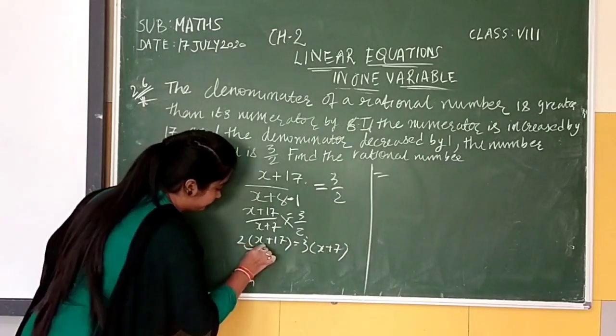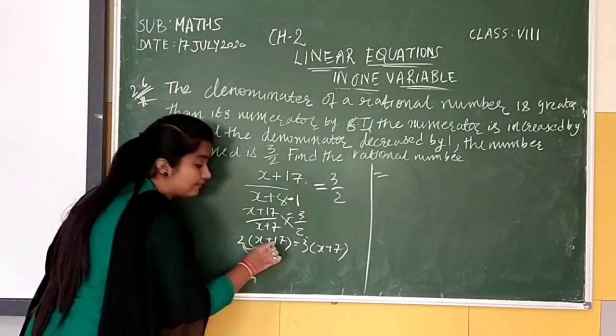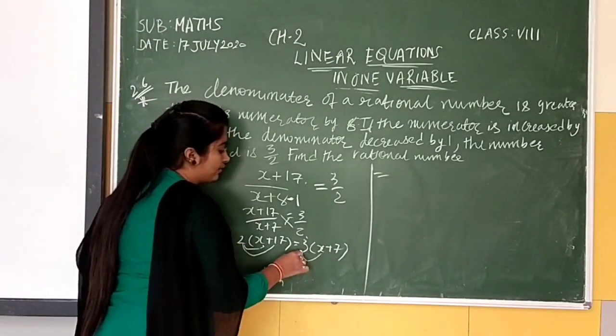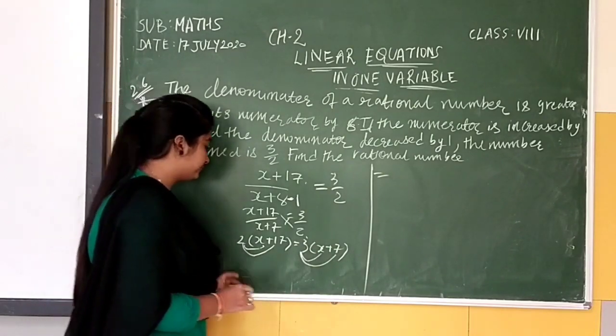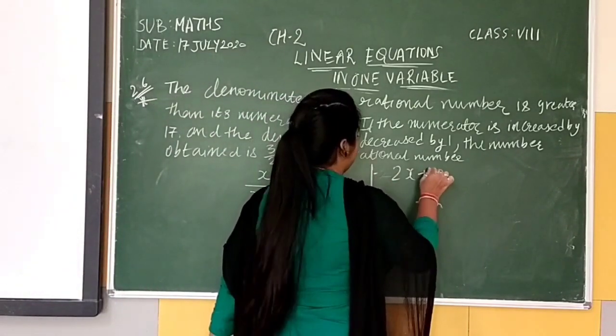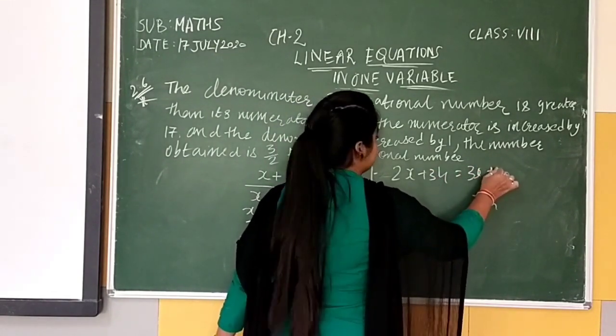Hummehra pura 2 hai, X ke saath multiply hoga, baad mein 17 ke saath multiply hoga, as well as 3 X ke saath bhi multiply hoga, aur baad mein 7 se multiply hoga. So here we have 2X plus 34 equal to 3X plus 21.